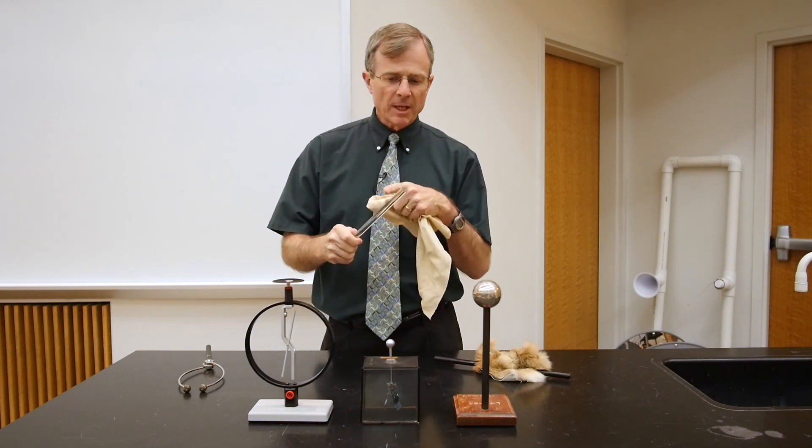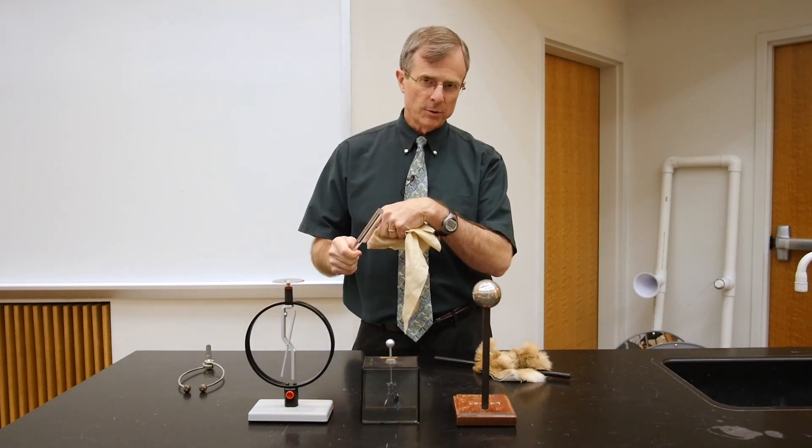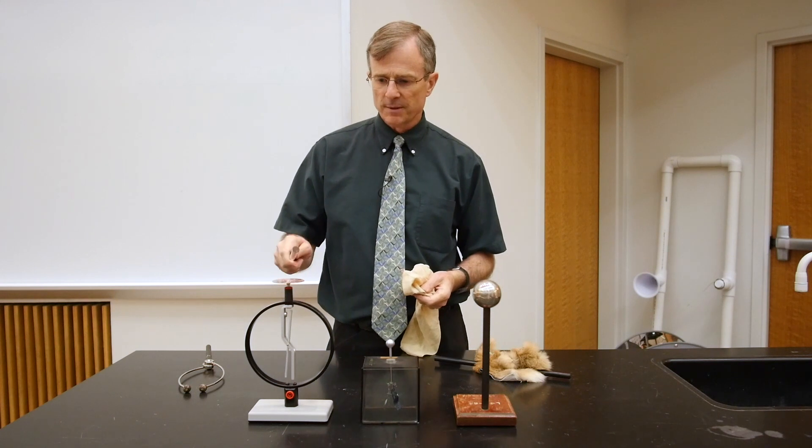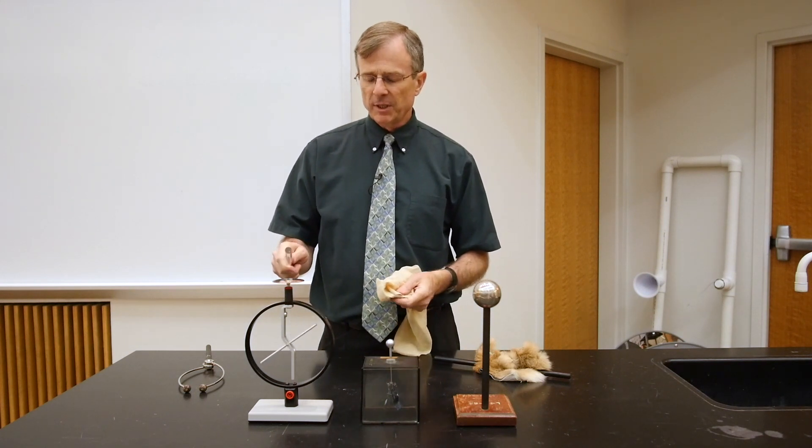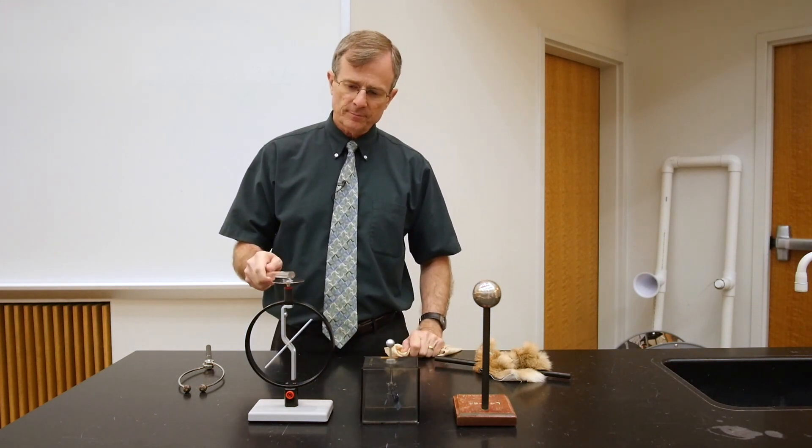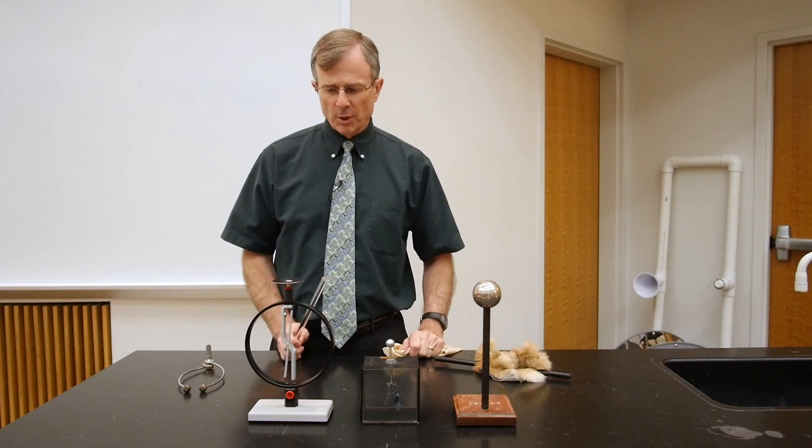And so having lost some electrons now, the lucite rod is positively charged. And we can get a movement of the brawn electroscope.